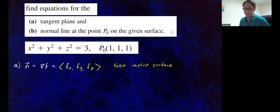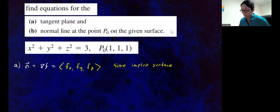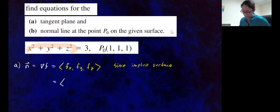So when you have an implicit surface, this vector will be perpendicular, or orthogonal, to the surface at that point. Now let's go ahead and compute our partial derivatives with respect to each variable X, Y, and Z. The partial of F with respect to X is just going to be 2X. Partial with respect to Y will be 2Y. And for Z, we're going to get 2Z.